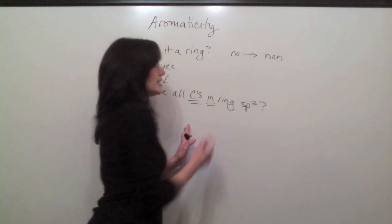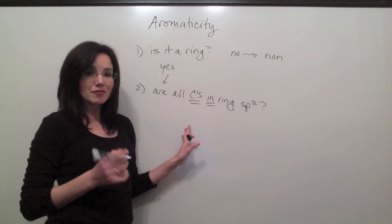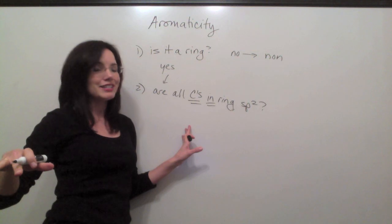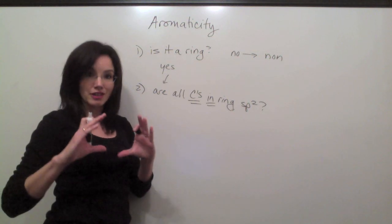Second of all, it's carbons in the ring that matter. If there's carbons outside the ring, maybe on a branch, they don't matter at all. It's just carbons that are in the ring structure.